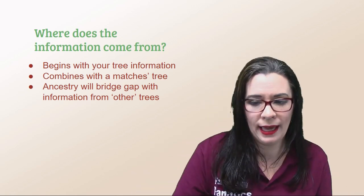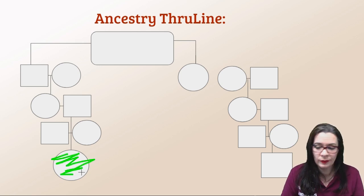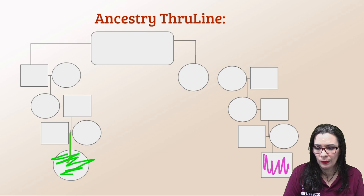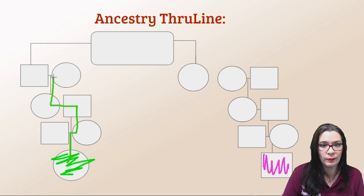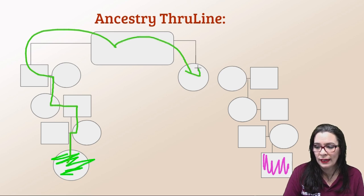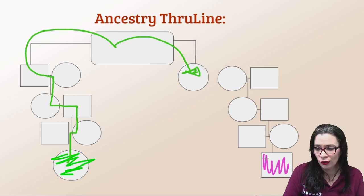Let's say this person is you and this person over here is your DNA match. In your tree you have your parents, then you go up through your mom, then to your mom's dad and your mom's mom. Your mom's line takes you up to a set of parents, and then you come up to an ancestor who has this person over here — and that's where your tree stops.